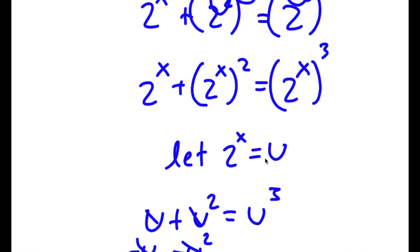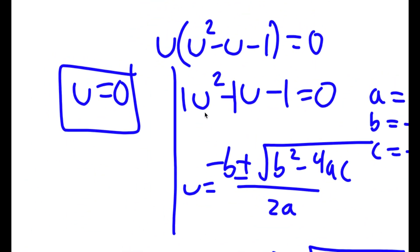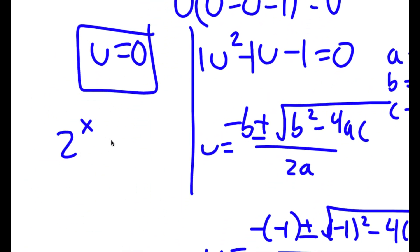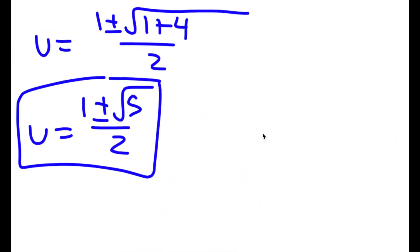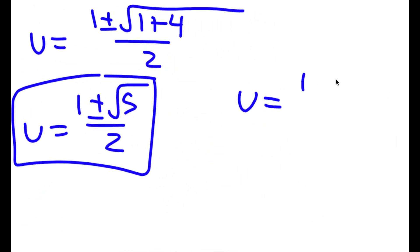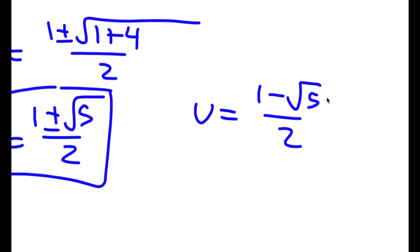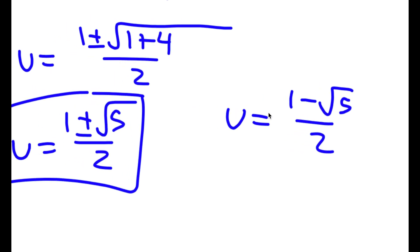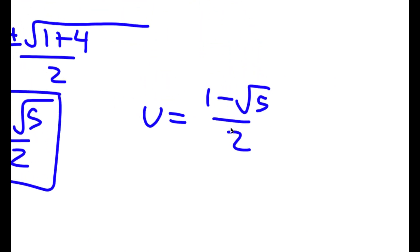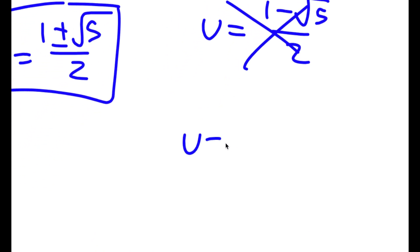Remember how we let 2 to the power of x equal to u. Starting with u equaling 0: 2 to the power of x equals 0 has no solution, because you can't raise a positive number to any power and get 0. Next, u is equal to 1 minus the square root of 5 over 2, which is a negative number, and you can't have 2 to the power of x equal a negative number. So this is also invalid.